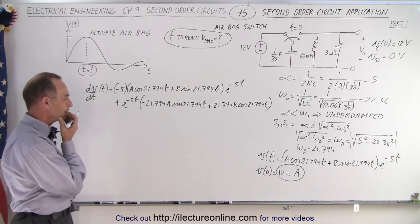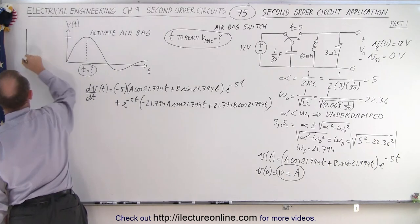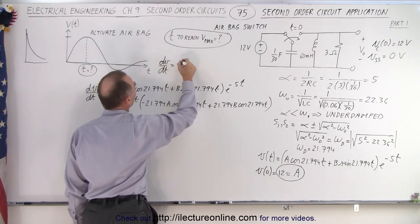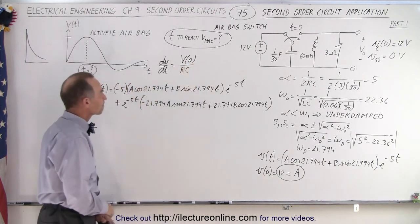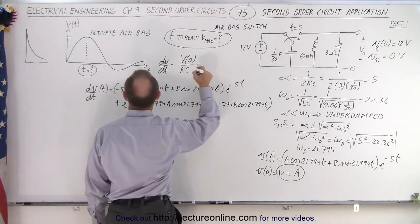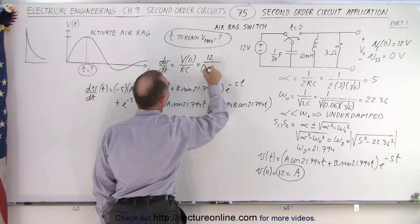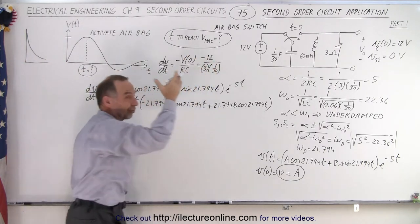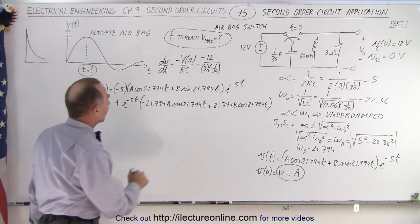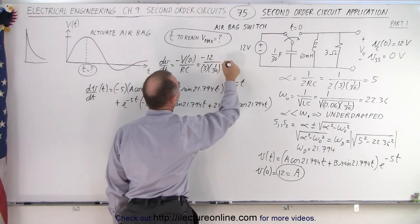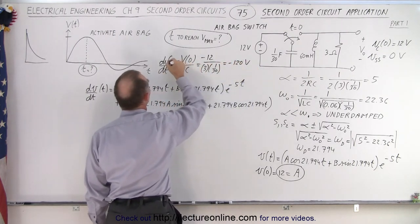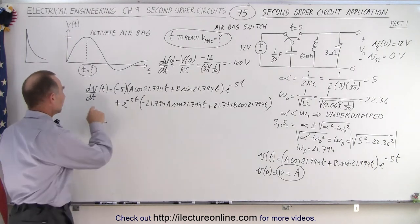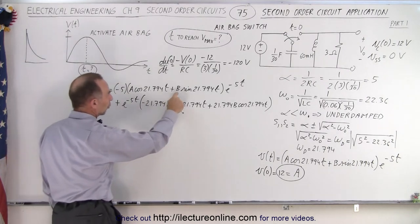We want to set that equal to zero, but first we need the initial value of dV/dt. For an RLC circuit, dV/dt at t equals 0 is equal to the voltage at zero divided by RC — that's 12 divided by 3 times 1/30. We also realize it's going to be negative because the voltage is going to drop across the capacitor. That gives us 12 divided by 1/10, which equals minus 120 volts per second at time equals zero.